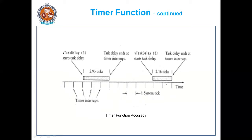At each system tick, the timer interrupt will be called. Once the timer interrupt is called, the timer will be incremented by one. So for example, if it is at 10, it will become 11, then 12, and so on — the system tick will be increased by one. Suppose you use V task delay of 3, meaning the system should delay for three ticks.